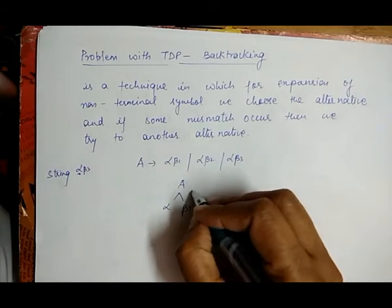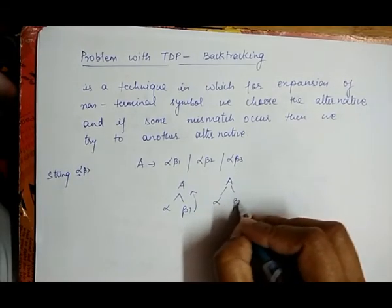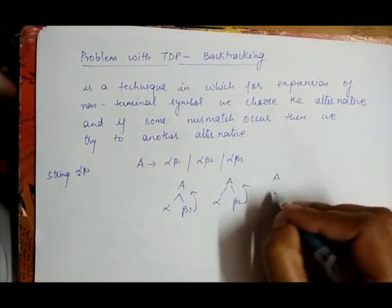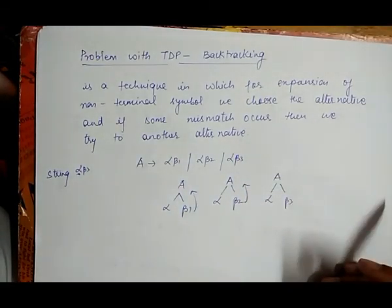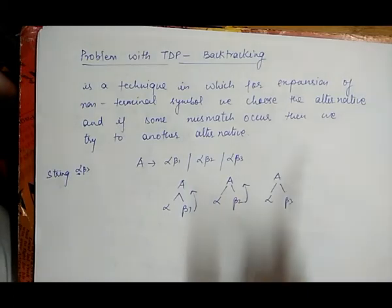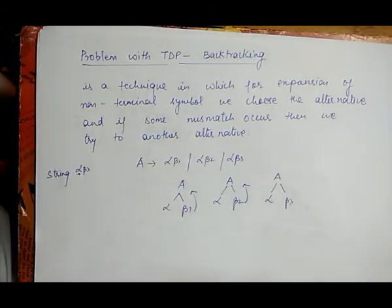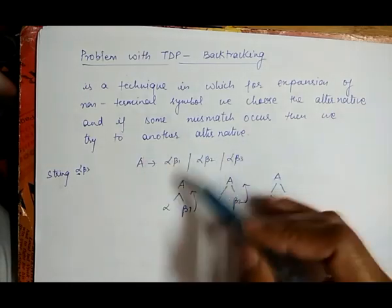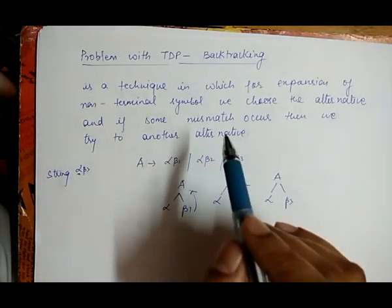So we have to backtrack to the starting symbol and take another alternative. If we choose A derives alpha-beta2, we still do not generate the required string, so again we have to backtrack. Then we choose A derives alpha-beta3. If there is a mismatch while generating a string and we do not get the same string after choosing one alternative, we have to choose another alternative from our grammar by backtracking to the starting symbol. This technique is called backtracking, which is one of the problems of top-down parsing.